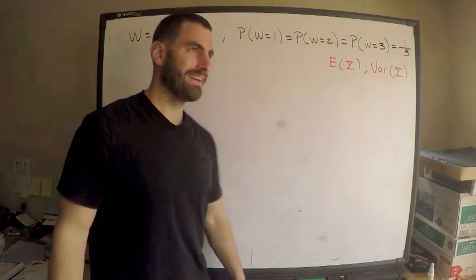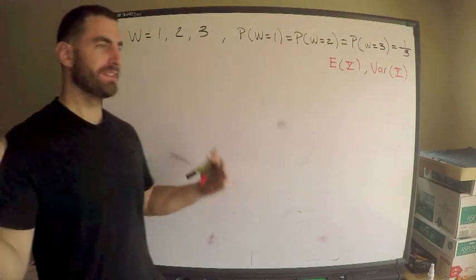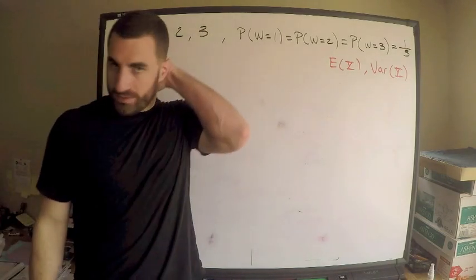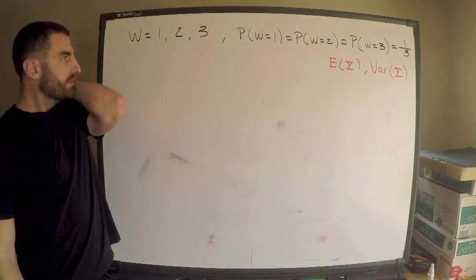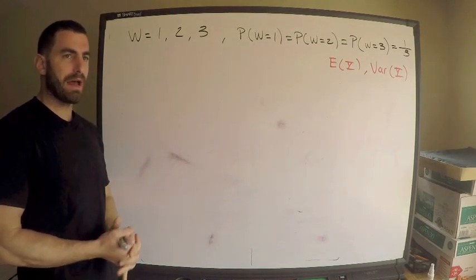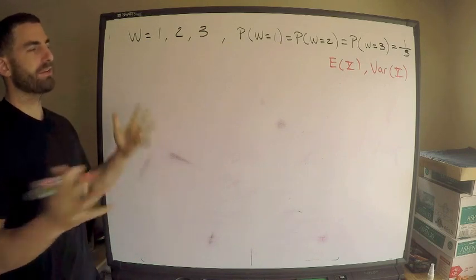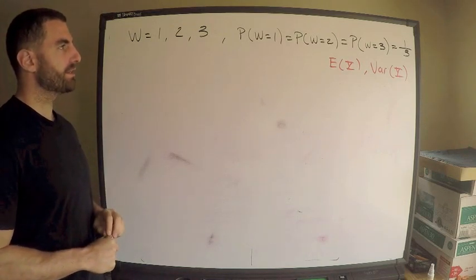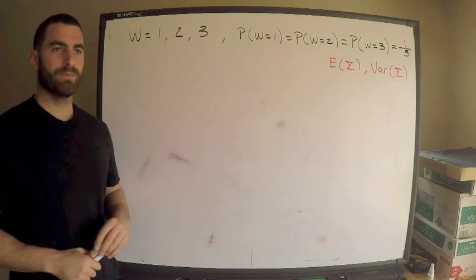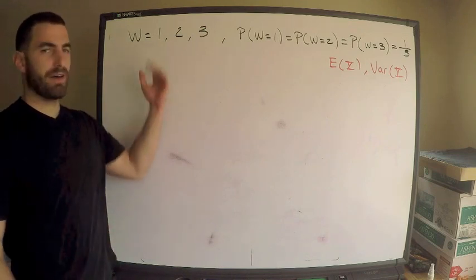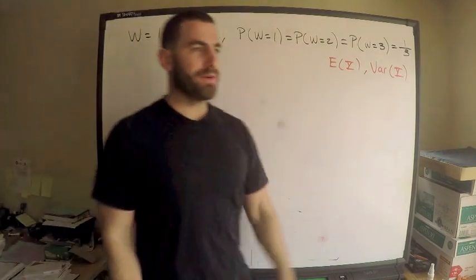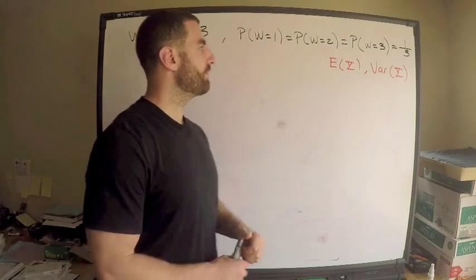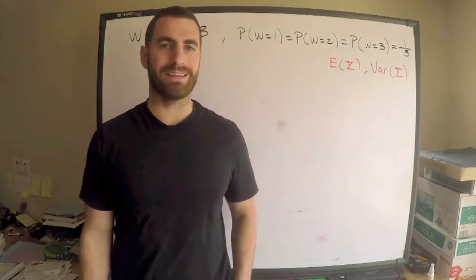This was a video requested today. I'm going to go through this question, apparently from an Aztec manual. We have a random variable W — it's discrete and only takes on the values 1, 2, and 3. Furthermore, the probability that W equals each of these values is one-third, since they're all the same and must add up to one. We want to know the expectation and variance of Y.